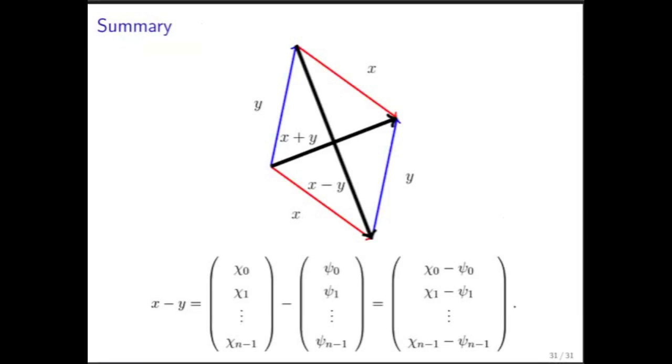In summary, it's important to keep this picture in mind right here when you think of adding or subtracting two vectors. And subtracting one vector from another simply means subtracting the components of that vector from the corresponding components of the vector from which you're subtracting.